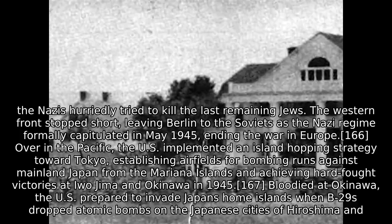Over in the Pacific, the U.S. implemented an island-hopping strategy toward Tokyo, establishing airfields for bombing runs against mainland Japan from the Mariana Islands and achieving hard-fought victories at Iwo Jima and Okinawa in 1945. Bloodied at Okinawa, the U.S. prepared to invade Japan's home islands when B-29s dropped atomic bombs on the Japanese cities of Hiroshima and Nagasaki, forcing the empire's surrender in a matter of days and thus ending World War II.